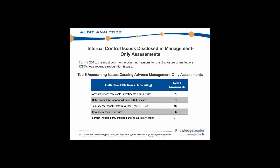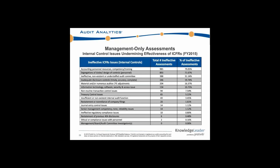These are a lot of similar issues that popped up in the auditor attestations but clearly ranked a little differently. Looking at all of the management-only assessments and all the issues tracked in terms of accounting personnel resources and competency training: almost 80% of all management-only ineffective ICFRs cited that accounting personnel resource issue, followed by over 70% for segregation of duties. You can really see the concentration in personnel and staffing-related issues that these smaller companies are struggling with in their internal controls over financial reporting.